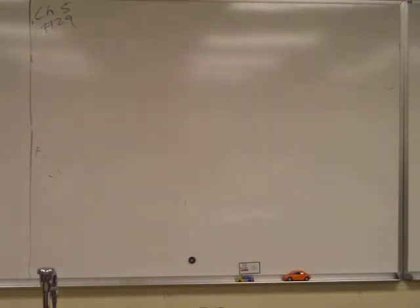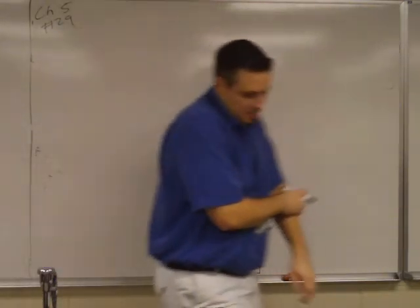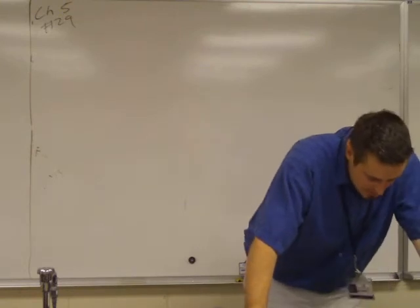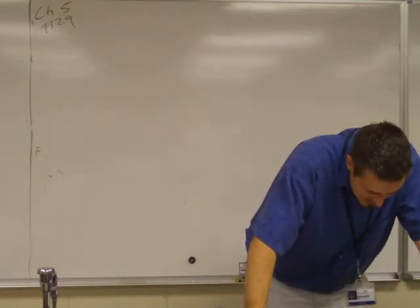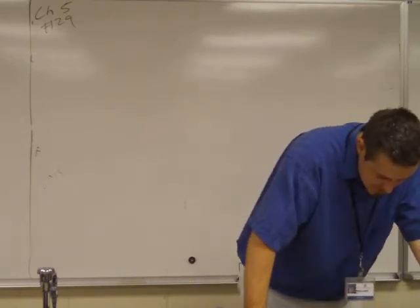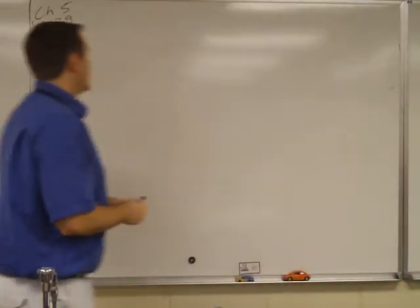Okay, so this is chapter 5, number 29. So you can read the problem, and we read it yesterday already. And it's asking us to find what is the initial speed of the card as it left the guy's hands.